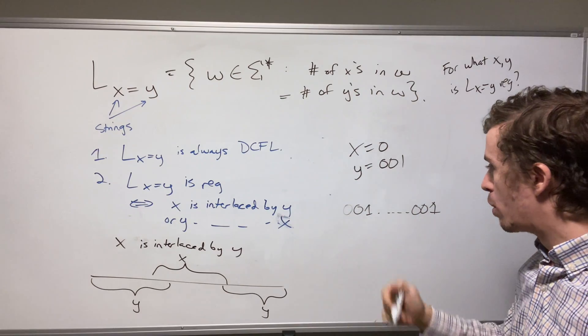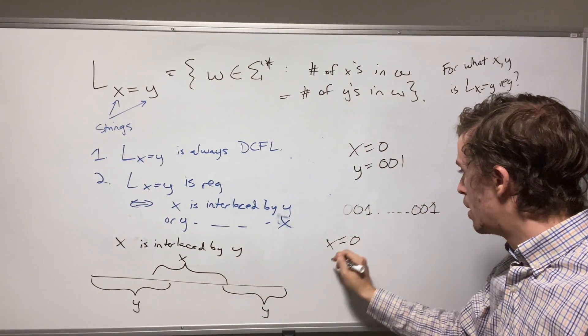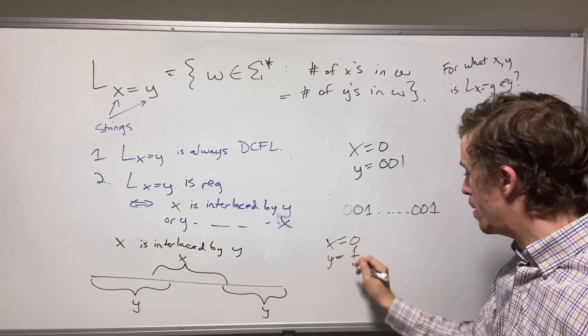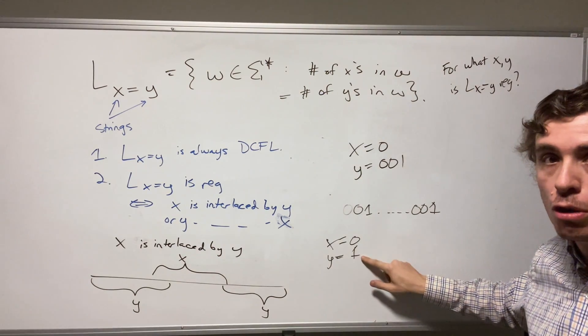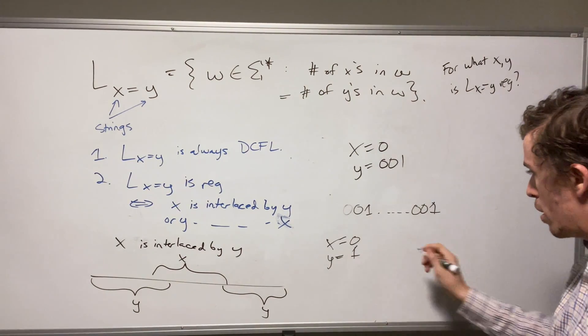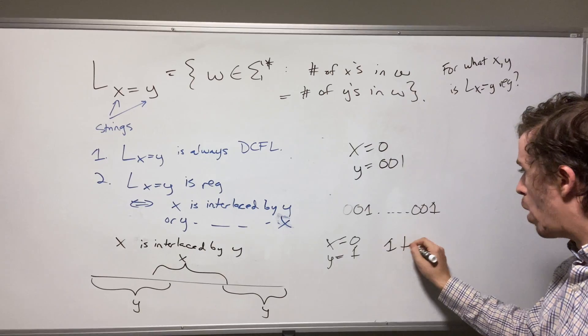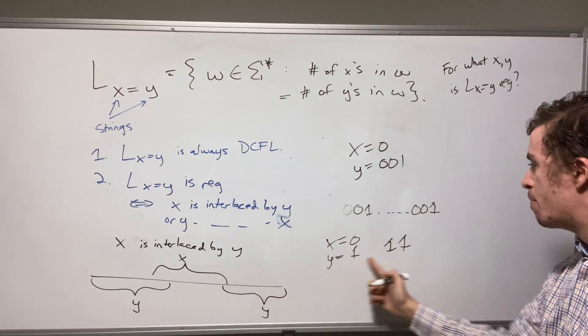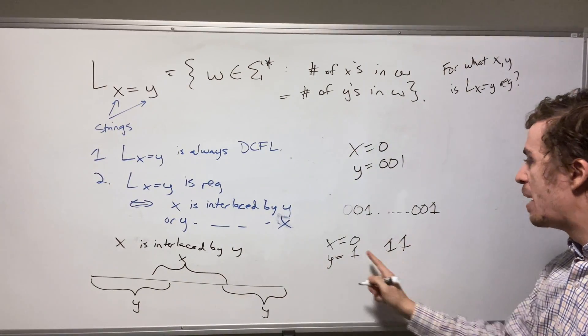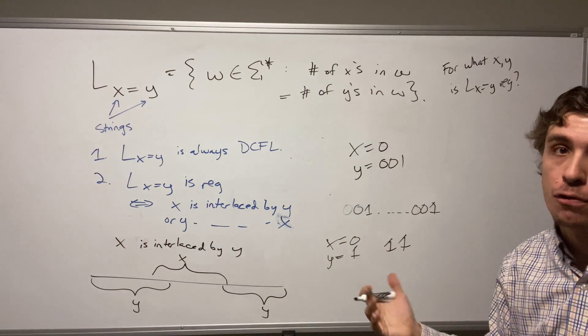And let's look at the case where X equals zero, and Y is equal to one. So if we look at the case where X equals zero, and Y equals one, well, if we have a string that's like one one, then Y bookends the string, but X is not appearing in here. And so therefore, it's not regular.